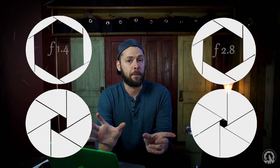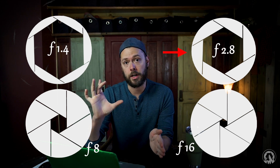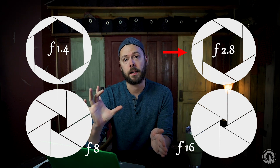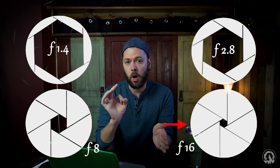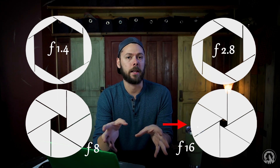Now here's the complicated part, and this is where a lot of people get confused. The f-stop and aperture seem backwards. The wider your aperture — the larger that opening — the smaller the f-number, the f-stop. The smaller the aperture, the less light, the bigger the f-number or the f-stop. So for example, if you have an f/2.8, you have a very large aperture, a very wide opening. If you have an f/16, you have a very small aperture, a very small opening.